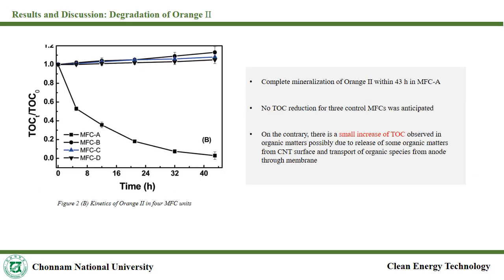The experiment was run for 43 hours and orange 2 degradations were calculated by total organic carbon. It can be seen that 100% mineralization was seen in cell A and no total organic carbon reduction was seen for the other three cells; instead, there was a little increase in its value. This might be due to the release of some organic matter from carbon nanotubes on the cathode and the transport of organic matter from the anode chamber to the cathode chamber.